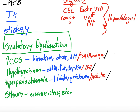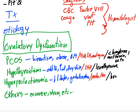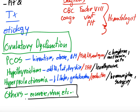For PCOS, treatment includes clomiphene to induce ovulation, metformin for insulin resistance, and OCPs to help regulate cycles. For hypothyroidism, levothyroxine or Synthroid. For hyperprolactinemia, bromocriptine inhibits prolactin production; if severe, transphenoidal pituitary adenomectomy may be needed. Once hormonal causes are ruled out, focus shifts to lifestyle factors like stress, extreme exercise, and eating disorders. Prioritize checking prolactin, thyroid, and PCOS first.